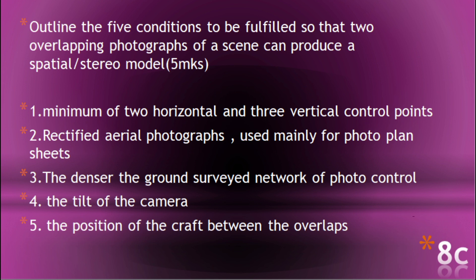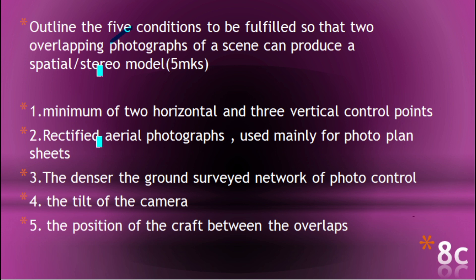Question 8c: outline the five conditions to be fulfilled so that two overlapping photographs of a scene can produce a stereo model — a 3D model of a building, terrain, or similar subject. First, there must be a minimum of two horizontal and three vertical control points.